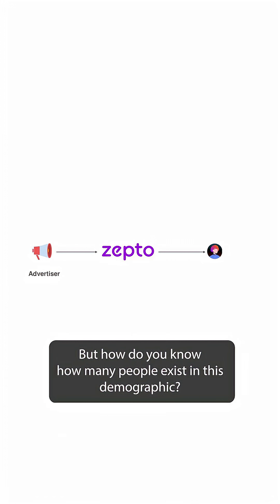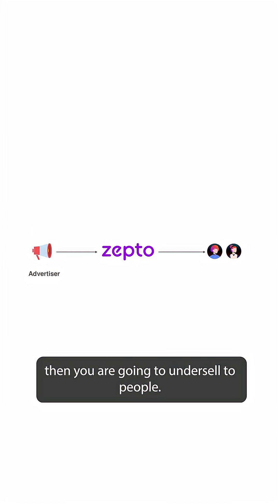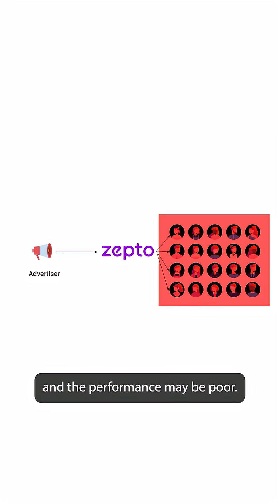But how do you know how many people exist in this demographic? Because if the demographic is very small, then you're going to undersell to people. But if the demographic is too large, then it's too general and the performance may be poor.